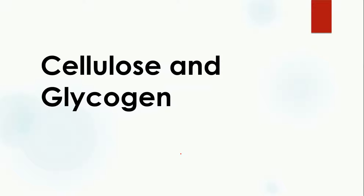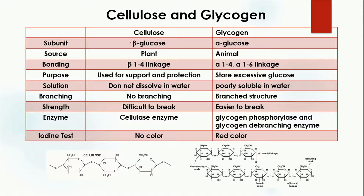Welcome to Ahmed Coaching. I'm your teacher Dr. Anam. Today we are going to study about cellulose and glycogen. Cellulose is made up of beta glucose — beta glucose molecules combine together to form the cellulose molecule. On the other hand, glycogen is formed when alpha glucose molecules combine together.